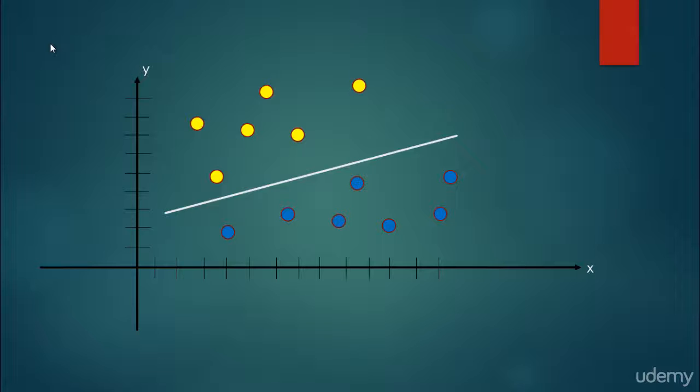we can train our neural network in order to present another point to the neural network. It can predict whether it is below the line or not.